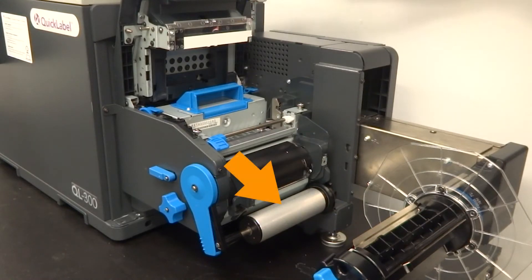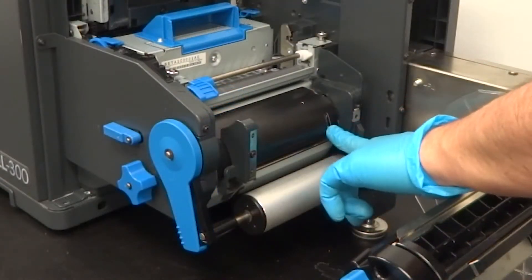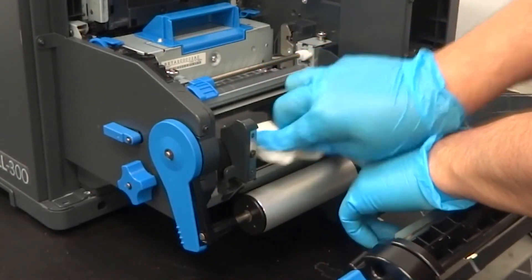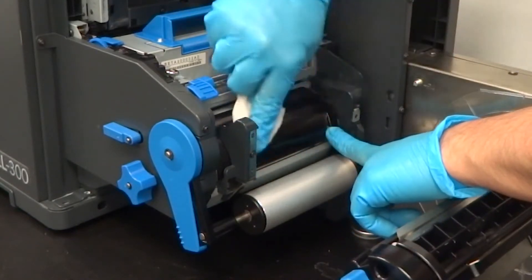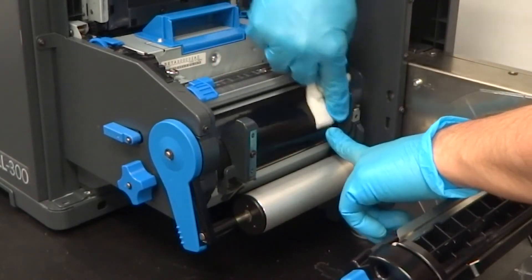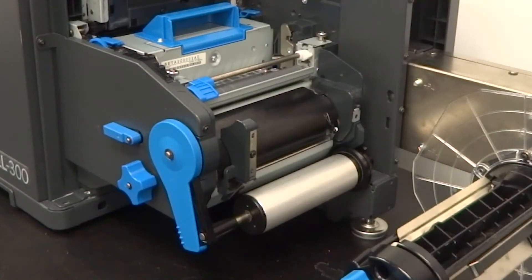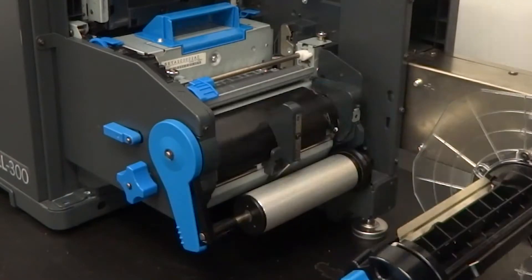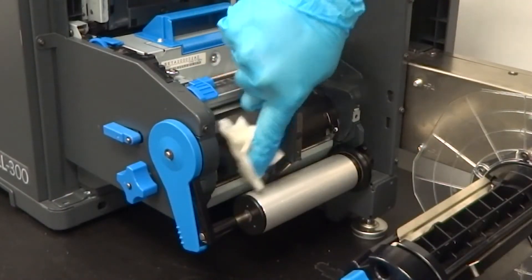Lower the tension roller to its lowest position. Gently hold down the media presence sensor to prevent it from being damaged during the next cleaning step. Wipe the surface of the paper guide while holding down the sensor. Now move the outer paper guide inwards and wipe the outermost section of the paper guide.